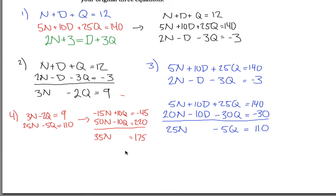So 35N equals 175, you might want to use a calculator here, if we divide both sides by 35, we get N is equal to 5. So what that tells me, now I know how many nickels I have, 5 to be specific.